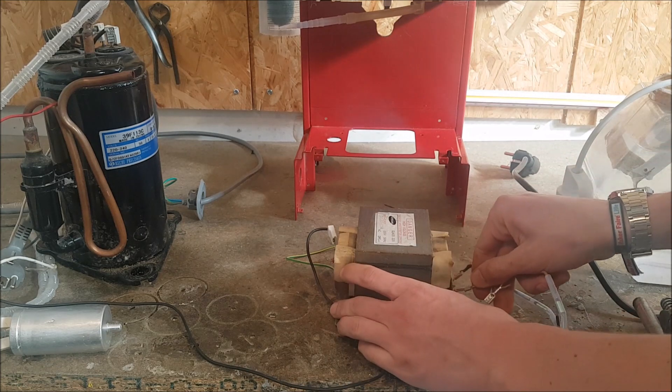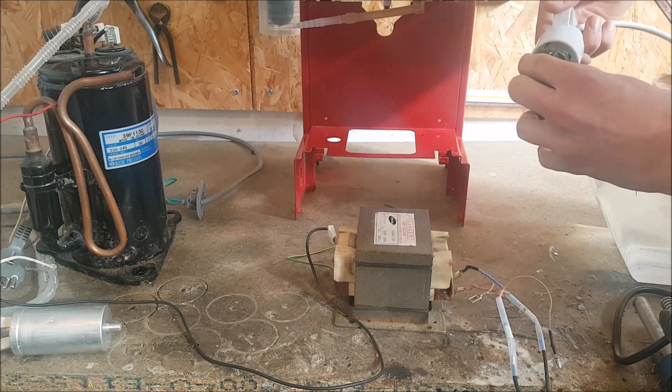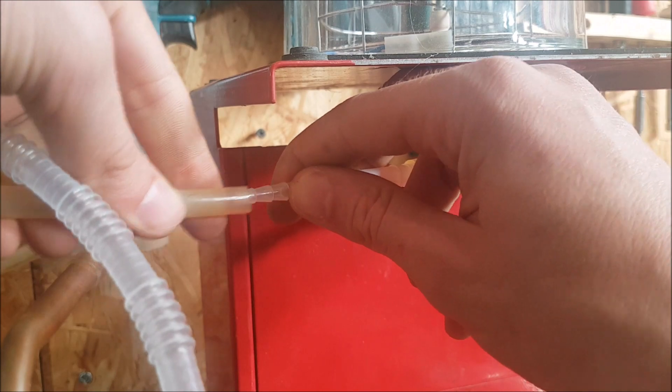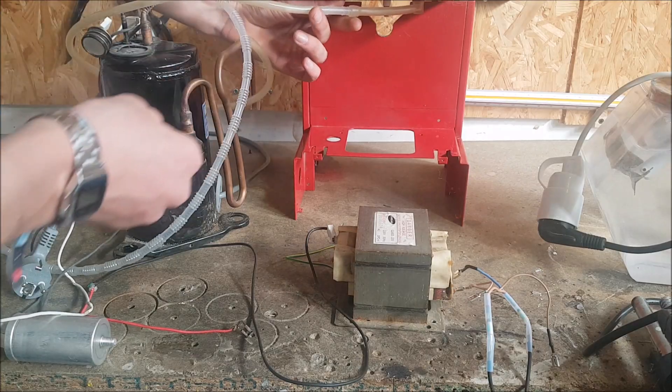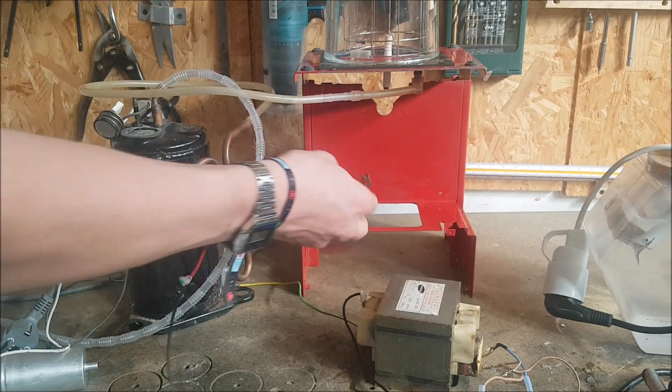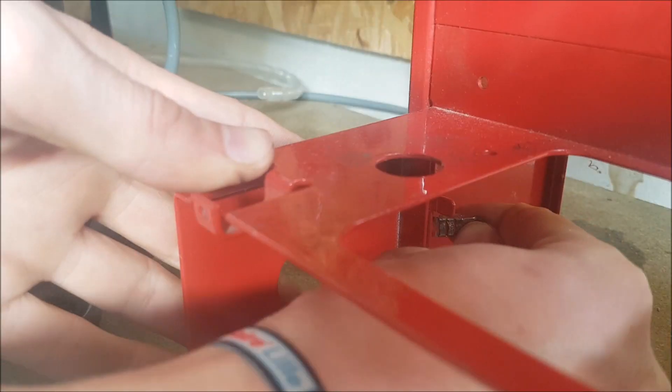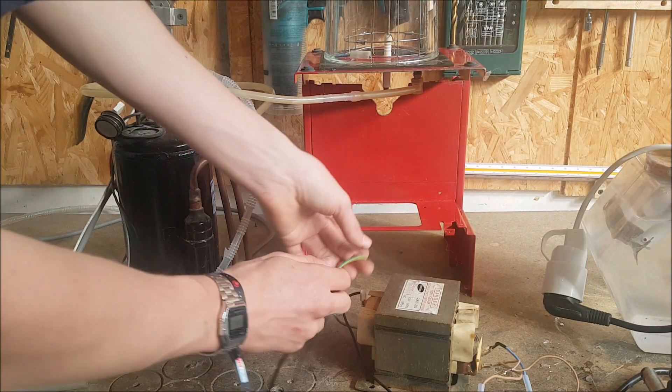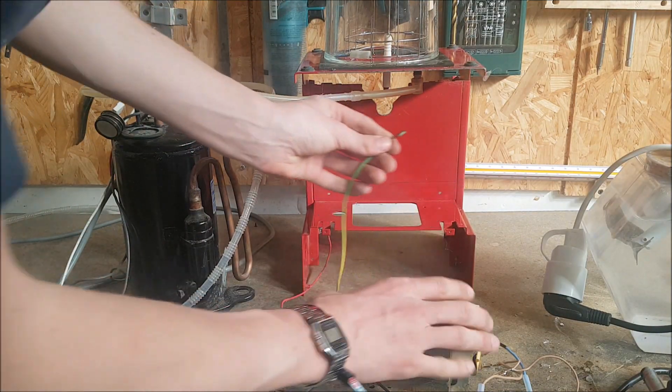For the wiring, you plug the microwave oven transformer into the variac, which itself is plugged into a wall outlet. You plug the compressor to the vacuum tube and the two leads that come out of the microwave oven transformer to the chassis and the central electrode.